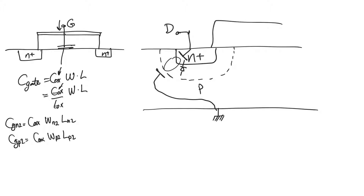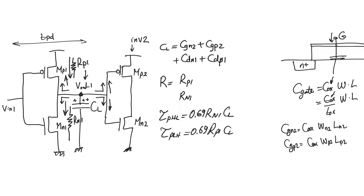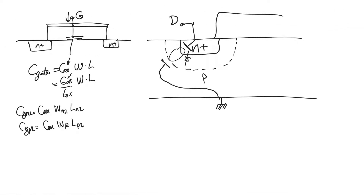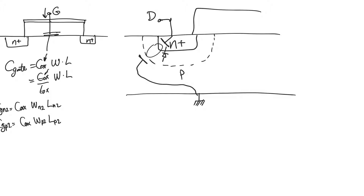The problem with this diffusion capacitance is that it is non-linear — its value changes with voltage. Since the drain is the output node, its voltage changes as we charge or discharge the node, so the capacitance changes too. To deal with this, we calculate an average value C_j, which accounts for the non-linear properties over the full switching range.